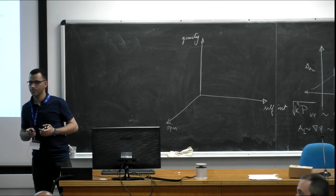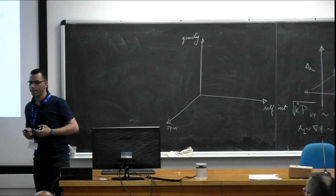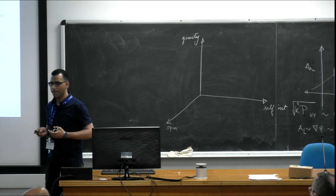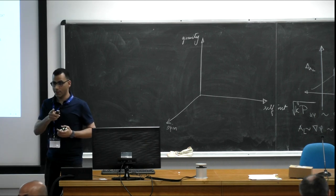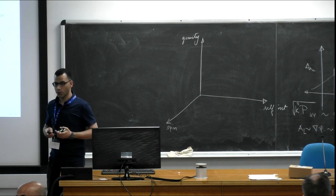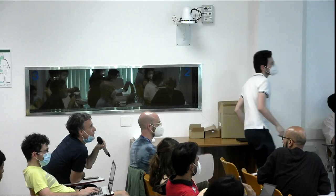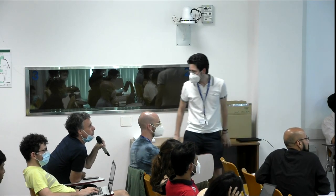Question: You discussed limits from conversion of relativistic axions into photons. Where are these axions coming from, and how do you know their abundance?